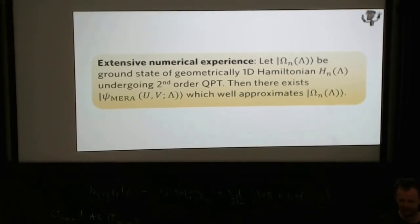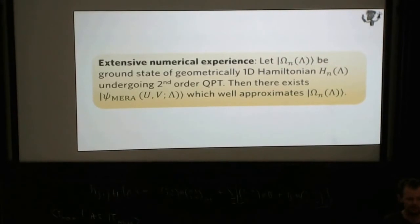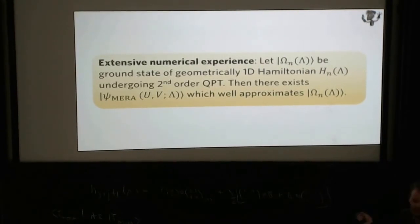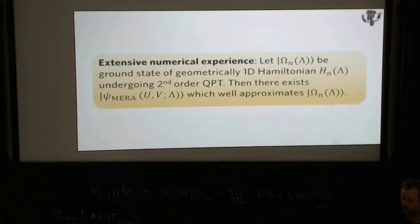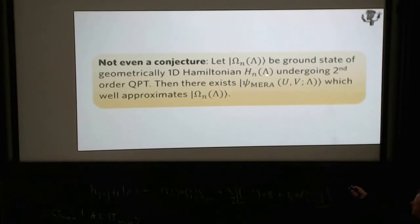There's been extensive numerical studies with tensor networks like MERA. What I can tell you is that if you've got a ground state of a geometrically one-dimensional Hamiltonian undergoing a second-order quantum phase transition, then there exists a MERA which well approximates it efficiently — in the sense of polynomial in number of spins n. We've observed this studying model after model: models based on transfer operators, models not based on transfer operators. What I'd love to write here is a proposition or theorem, but unfortunately all I can give you is not even a conjecture — because I still haven't gotten round to actually defining what it means for a model to undergo a second-order quantum phase transition.